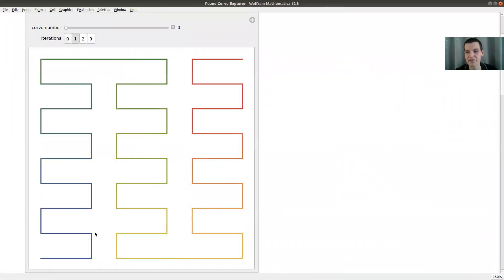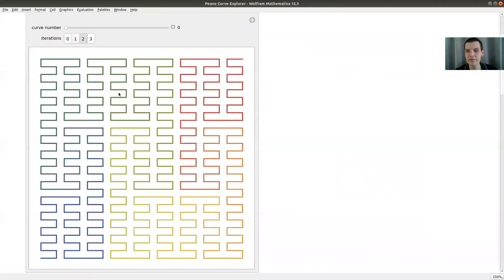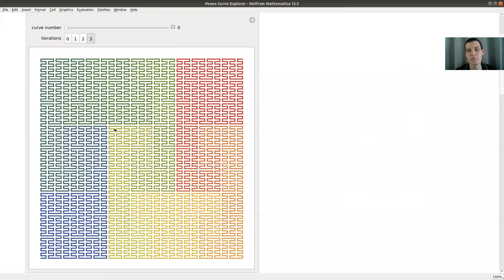So after a certain number of iterations you get the pattern, right? You start here, iterate that in a certain way, now you get this kind of pattern. Iterated a little bit more, it's kind of a pattern inside of itself—this fractal type idea.